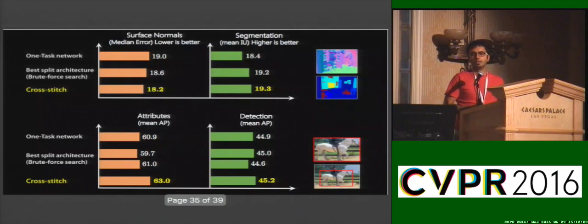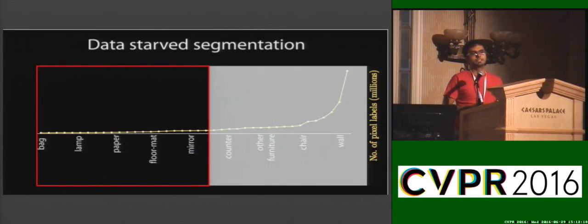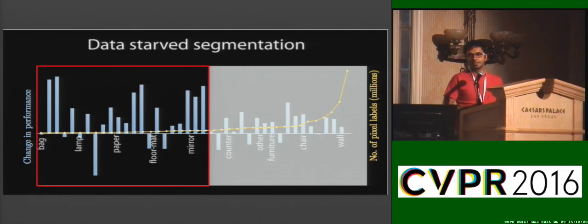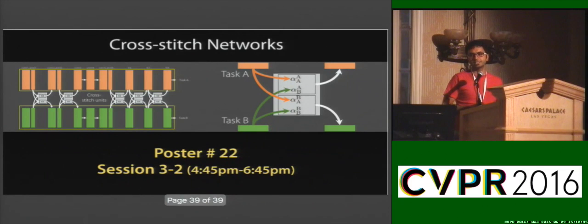So let's look at some results. We noticed that cross-stitch networks improve performance for both pairs of tasks — segmentation and normals, and attributes and detection. In fact, they perform better than one-task networks and brute force networks. For categories with little data, we plot the change in performance relative to the baseline network and notice that we improve their performance significantly. The same trend holds for attributes, where we improve significantly for classes with little data. For more information, please visit our poster. Thank you.